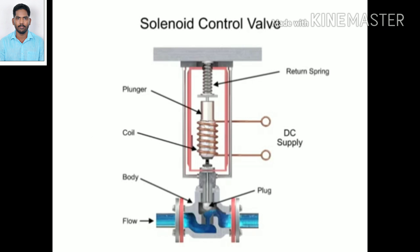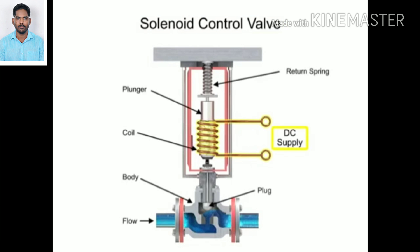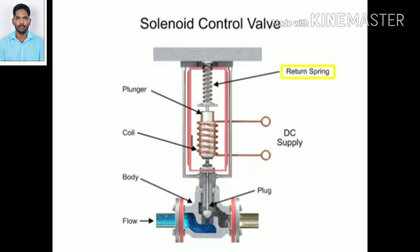For on-off control of the valve, a solenoid is used to actuate the valve to a fully closed or fully open position. Applying current to the coil generates a magnetic field that moves the plunger downward against the return spring. With zero current applied to the coil, the spring pulls the plunger upwards to the fully open position for a normally open state control valve.